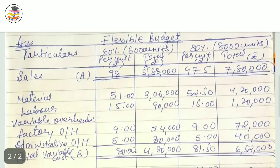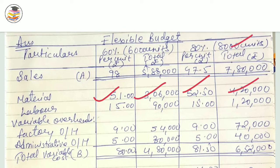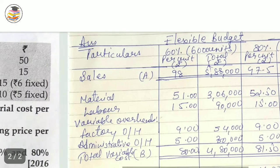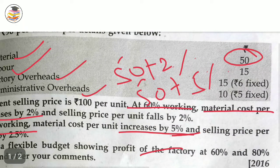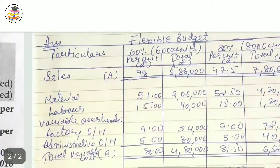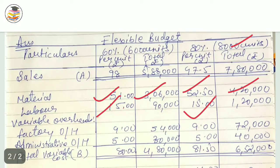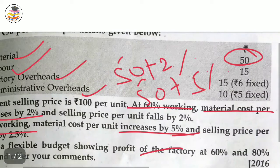For labor, it is 15, so 15 × 6,000 and 15 × 8,000. For variable factory overhead: out of the 15, the fixed portion is 6, so the variable portion is 9. So 9 × 6,000 and 9 × 8,000 for variable factory overhead. Then add up for total variable cost and get contribution.